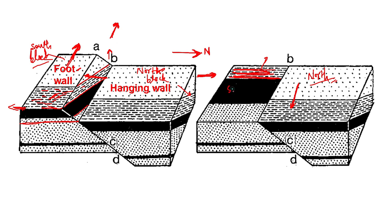This means that the opposite thing should happen for the beds in the north block to shift towards the left-hand side. So for that, there should be a reverse fault.